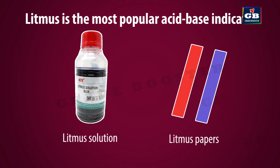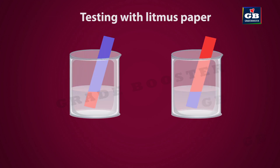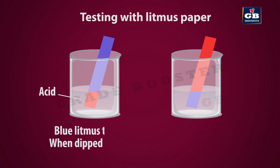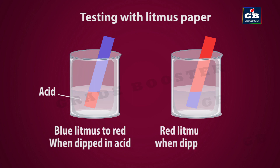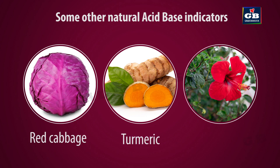We can test the presence of an acid or a base using acid-base indicators. Litmus is the most popular acid-base indicator. Blue litmus paper turns to red when dipped in acid, and red litmus paper turns to blue when dipped in a base. Red cabbage, turmeric, and hibiscus are some of the natural indicators.